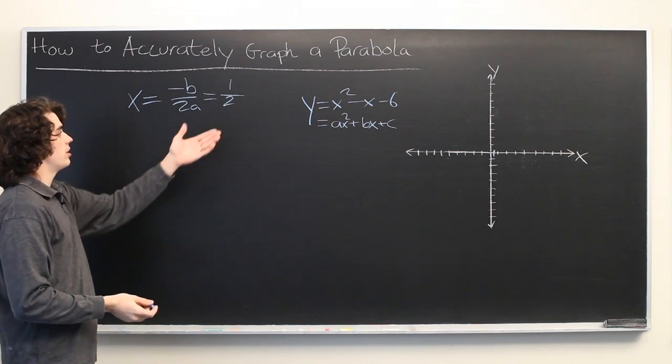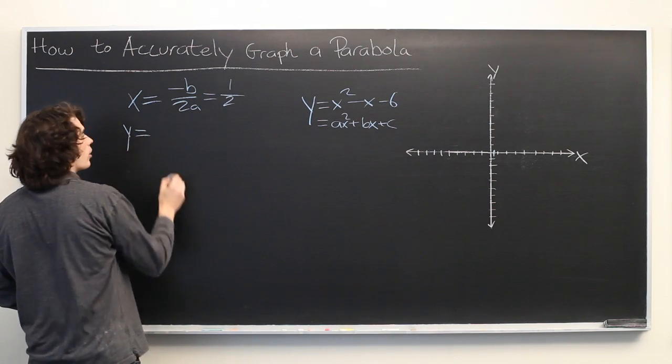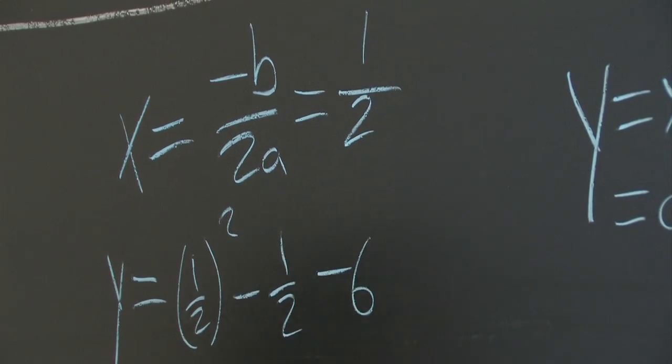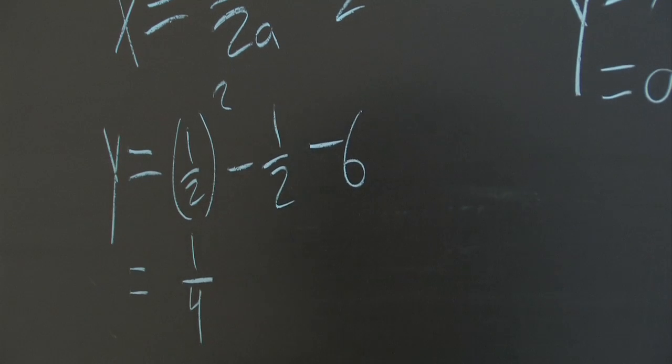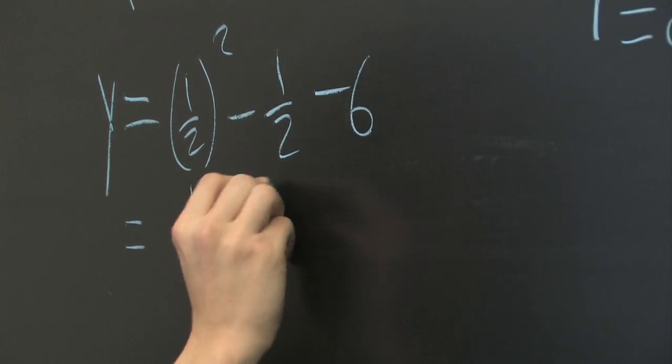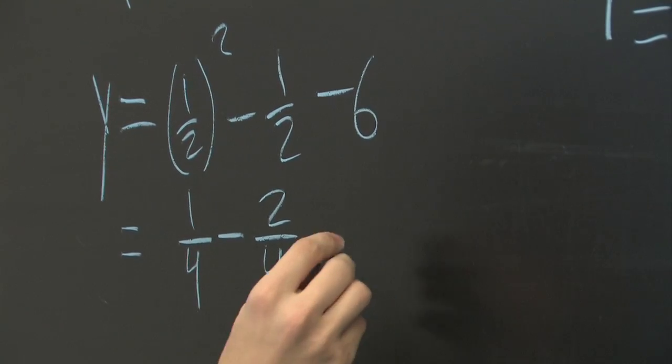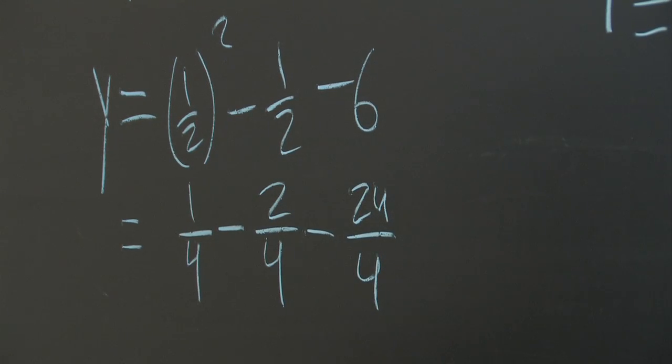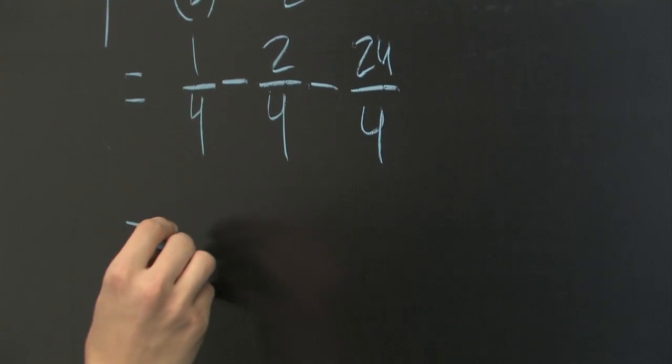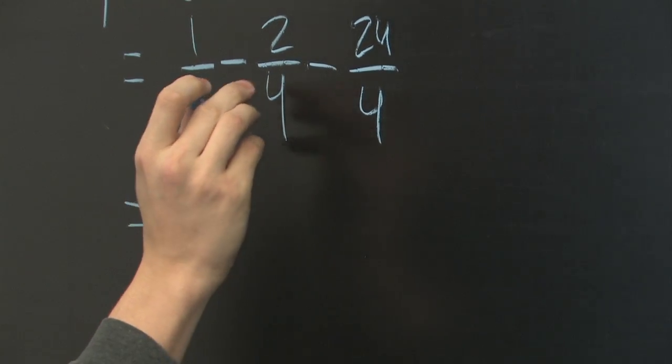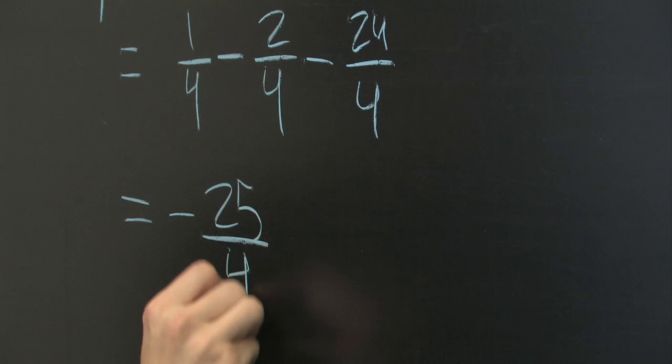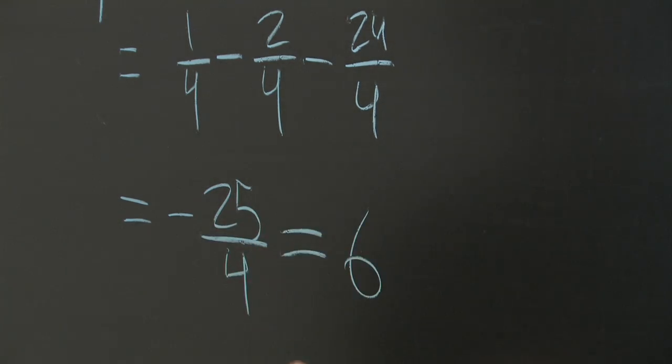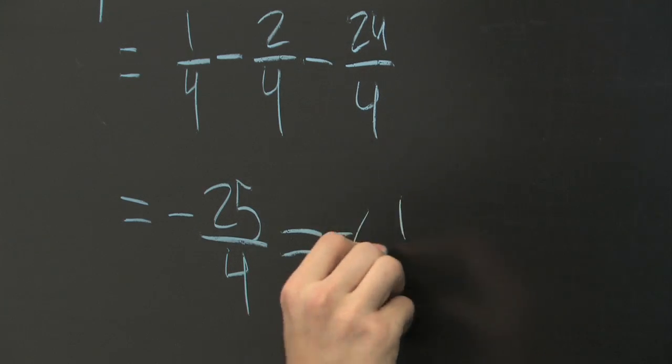Now, to find the y-coordinate of that, we simply need to plug this into our equation. So, the y-coordinate is going to be 1 half squared minus 1 half minus 6. 1 half squared is 1 fourth, and we're going to convert 1 half into fourths just to make it easier, and we'll do the same for minus 6. Multiplying both the top and bottom of this fraction by 4, we get negative 24 fourths. Now, we simply need to add up these numbers, and then we'll have our vertex. So, 1 minus 2 is negative 1, negative 25 fourths. And if you want to make it a little bit easier to find on a graph, you can convert this into a mixed fraction rather, and we get negative 6 and 1 fourth.